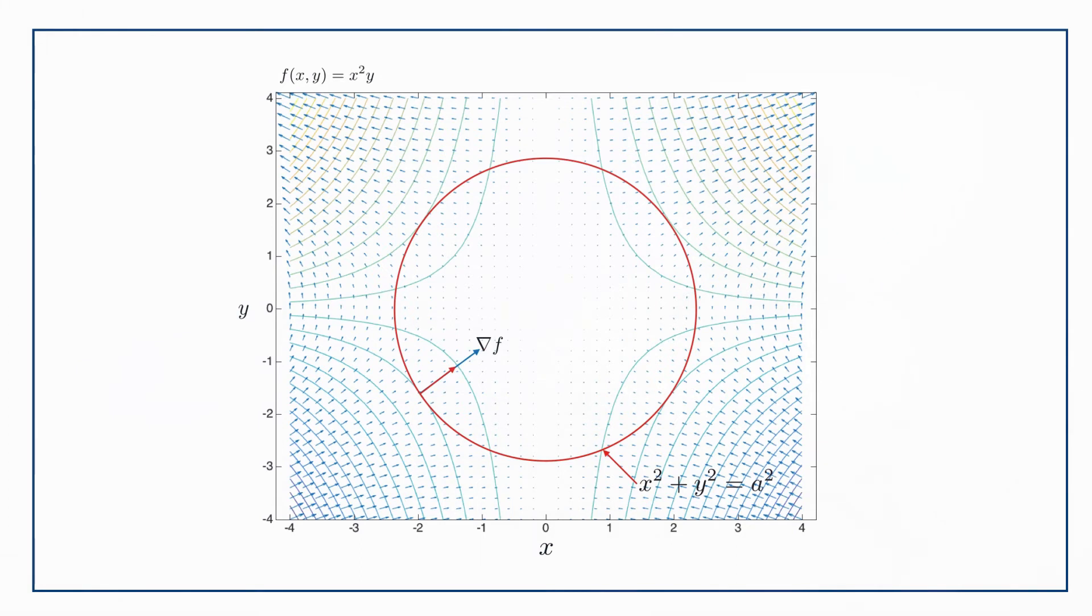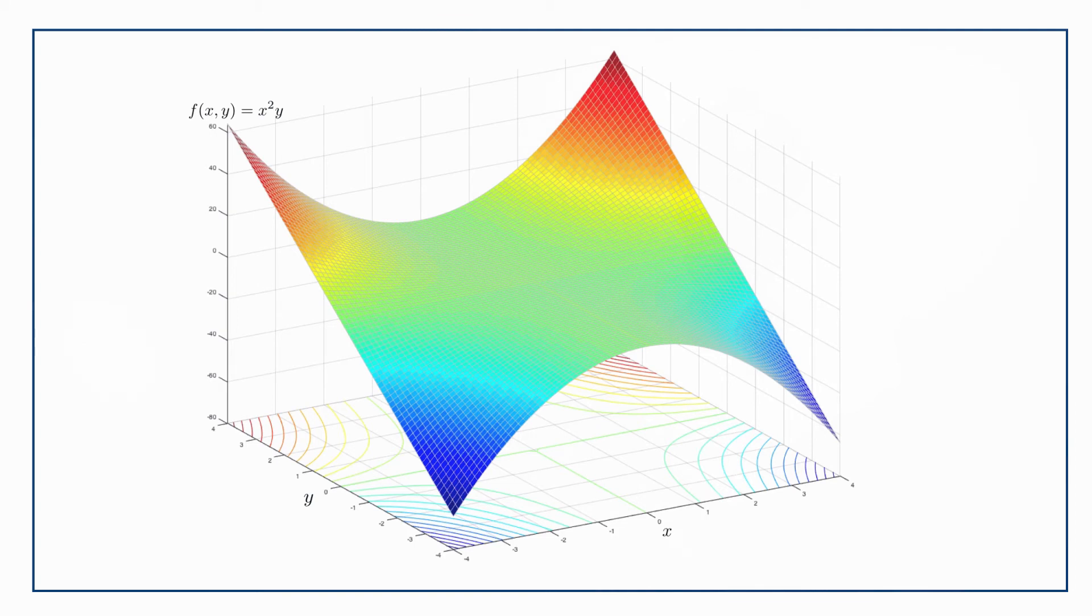So two of our solutions are here, and two here. When we switch to the 3D view, we can see that the two with positive y are maxima, and the two with negative y are the minima.